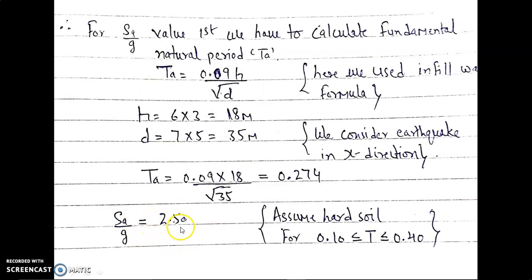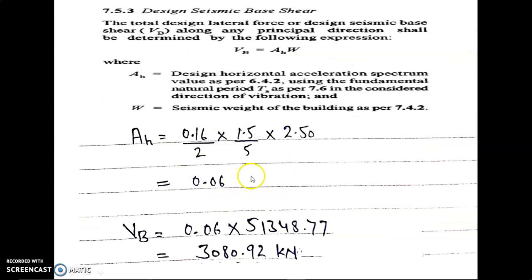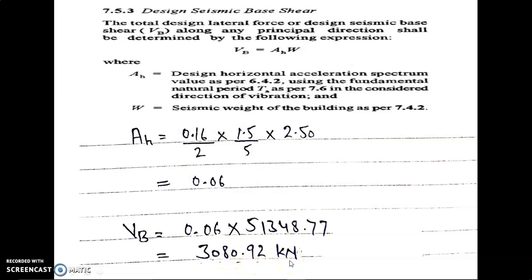Now that we have all the values for the AH formula, we substitute them in and calculate AH. Then using VB = AH × W, we substitute all values and obtain the base shear VB = 3080.92 kN.